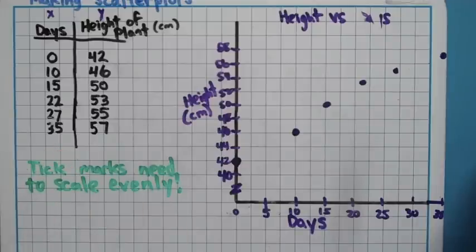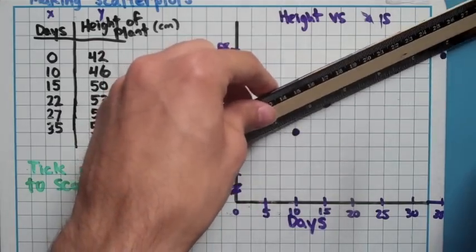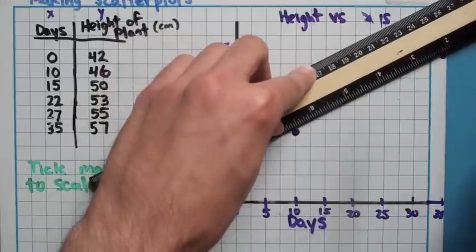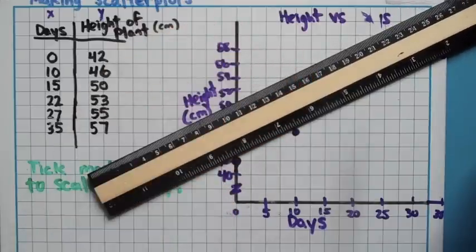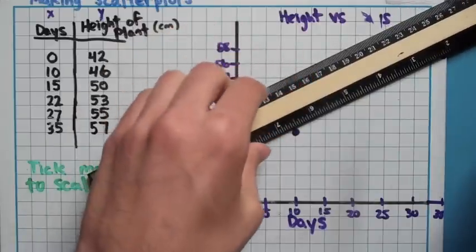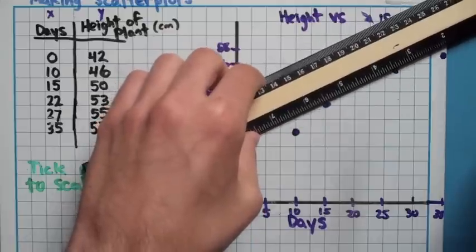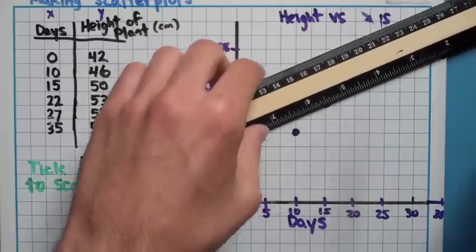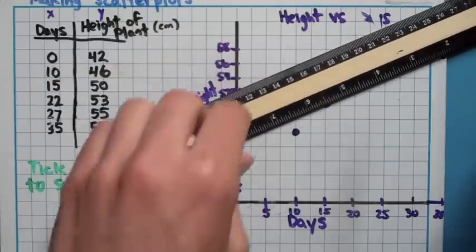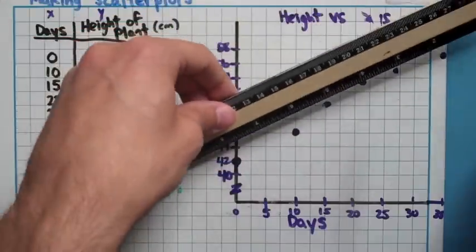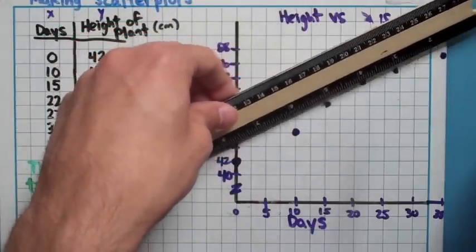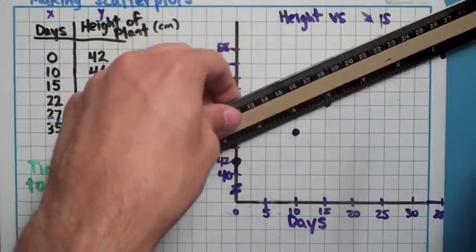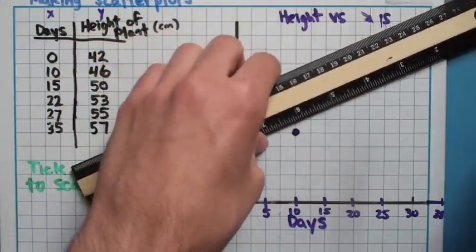So I'm going to take my ruler, or some sort of straight edge, and you want to put it through the middle of your points, so it kind of follows them along. You want to have about the same number of points above and below your line. So try to aim for that. And you want to make sure when you do this that at least two points end up being on your line when you do this. So you want to go through the middle of your points, and you want to have at least two points on your line.